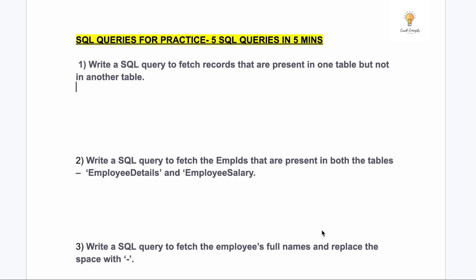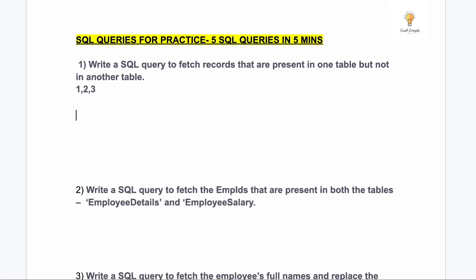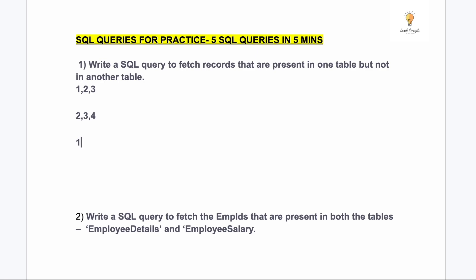Our first query is: write a SQL query to fetch records that are present in one table but not in another table. Suppose we have one table which has values 1, 2, and 3, and our second table has values 2, 3, 4. Our output should be just 1, because we need to fetch records present only in the first table and not in the second.